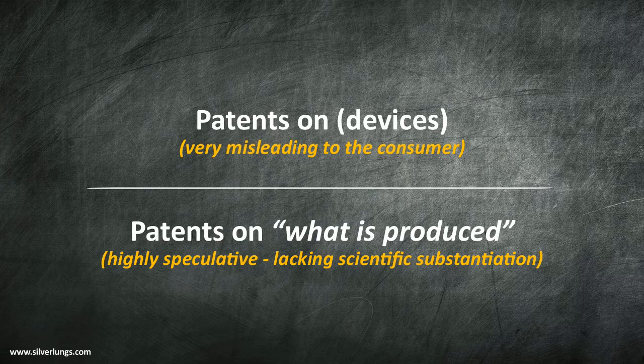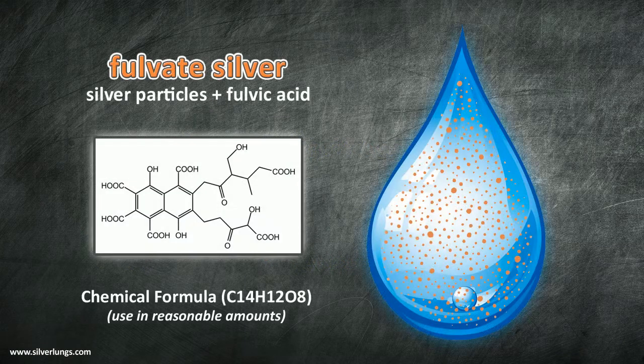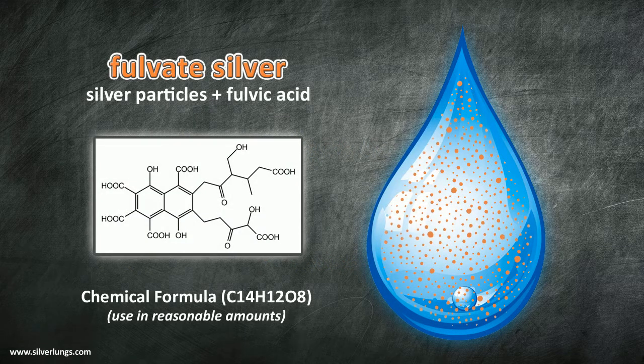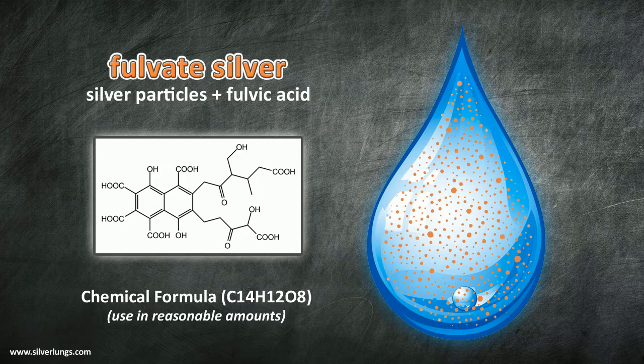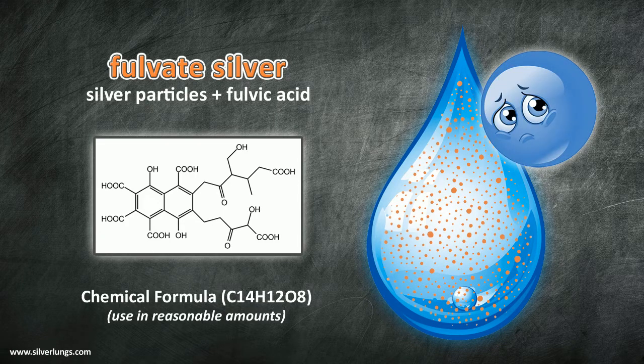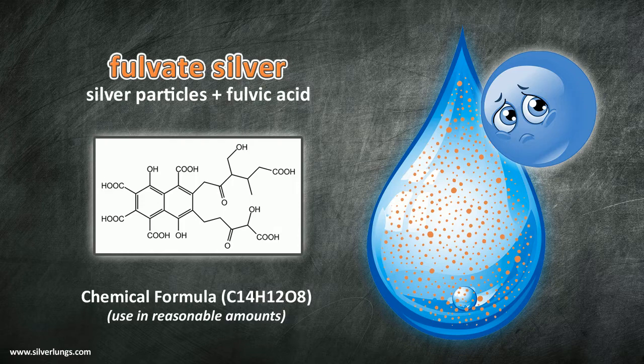Moving on in our discussion of different colloidal silver variants, fulvate silver is another type similar to citrate silver except that fulvic acid is used as the hidden ingredient to produce higher concentrations than normally possible. Isolated incidents of argyria have been tied to this type of silver as well but when used responsibly it is generally found to be safe.